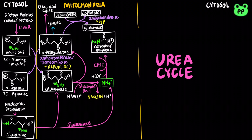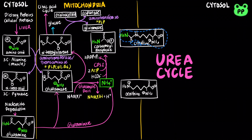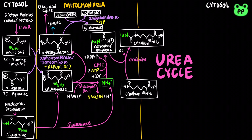Carbamoyl phosphate is now ready to enter the urea cycle. In the first step, carbamoyl phosphate donates its carbamoyl group to ornithine to form citrulline with the release of inorganic phosphate. This reaction is catalyzed by ornithine transcarbamoylase.